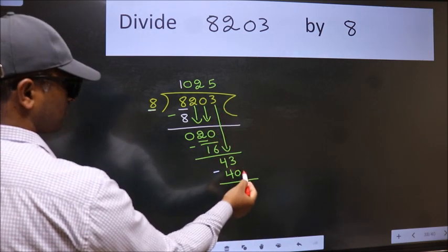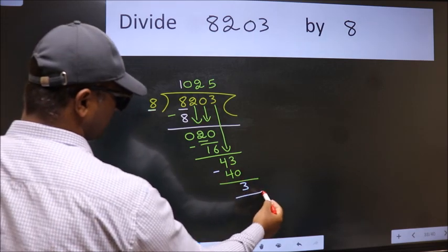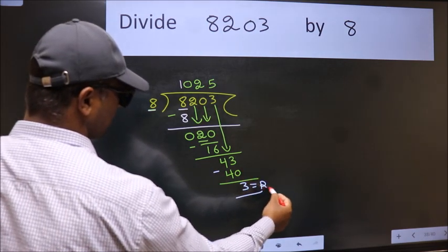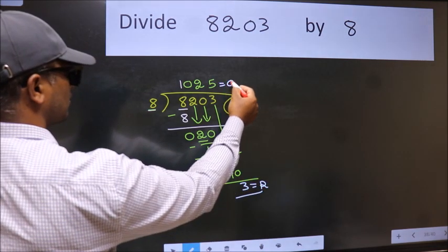No more numbers to bring it down, so we stop here. This is our remainder and this is our quotient.